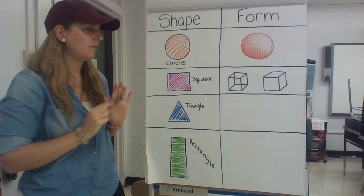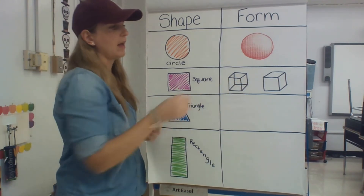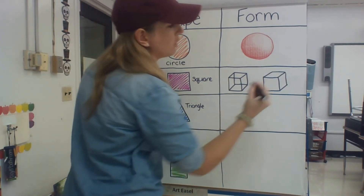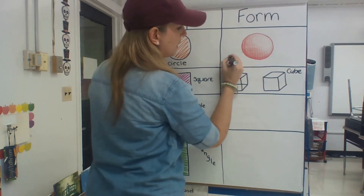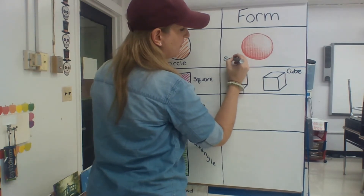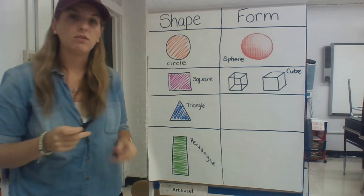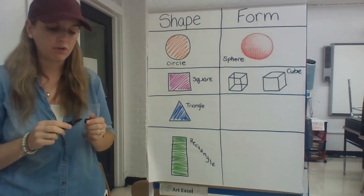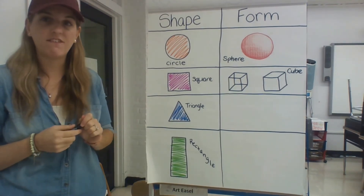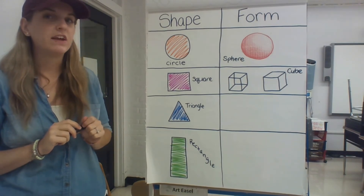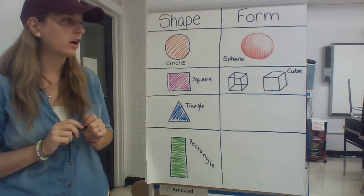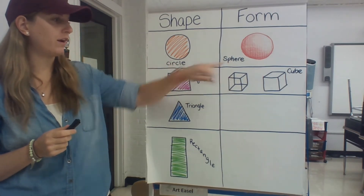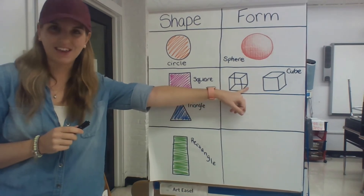So you take a flat square and turn it into a 3D cube. And a circle becomes a sphere — spelled S-P-H-E-R-E — and a square becomes a cube.